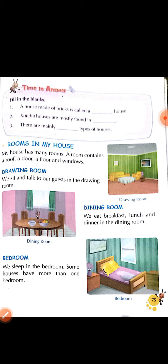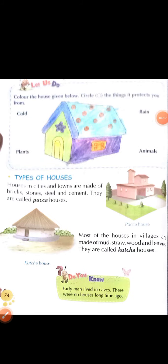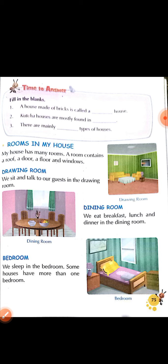Times to answer — filling the blanks. A house made of bricks is called a blank house. Jo house banta hai bricks se — made of bricks, stones, steel and cement — woh kaunsa house hai? Pakka house. Kaccha houses are mostly found in villages. Villages mein zyada tar aisa kaccha house milega. There are mainly two types of houses — pakka house and kaccha house.